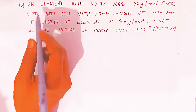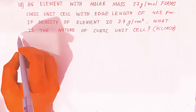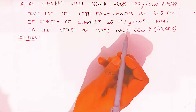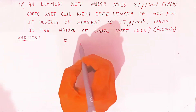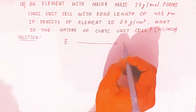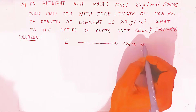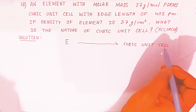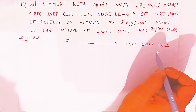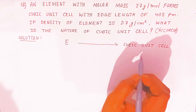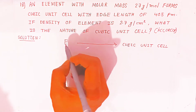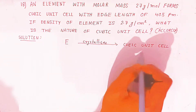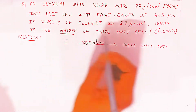The name of the element is not given here. So with only the given data, we have to find the nature of the cubic unit cell — whether it is a simple cubic unit cell, body centered cubic unit cell, or FCC. That is what is being asked: the nature of the cubic unit cell.